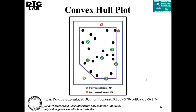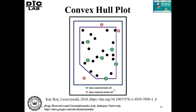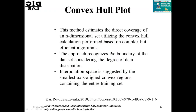The third method is the convex hull plot — a geometrical method. It is a convex-shaped polygon considering the training set data, and it is desirable that test compounds are enclosed within the domain of the training compounds. This method estimates the direct coverage of an N-dimensional set utilizing convex hull calculations. With increasing dimensions, the complexity of calculation increases — it is best for two to three dimensions. The approach recognizes the boundary of the dataset concerning the degree of data distribution.